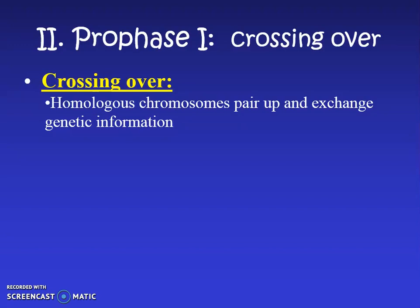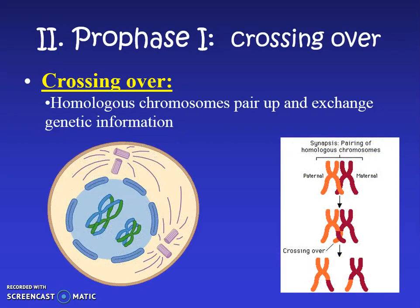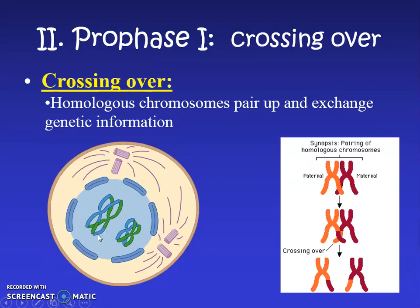In prophase 1, an important thing happens called crossing over. Crossing over is when homologous pairs — pairs that are the same from mom and dad, with the same traits on the same chromosome — exchange genetic information. Notice the two big chromosomes here are like hugging; the blue daddy one is giving DNA to the green mommy one.